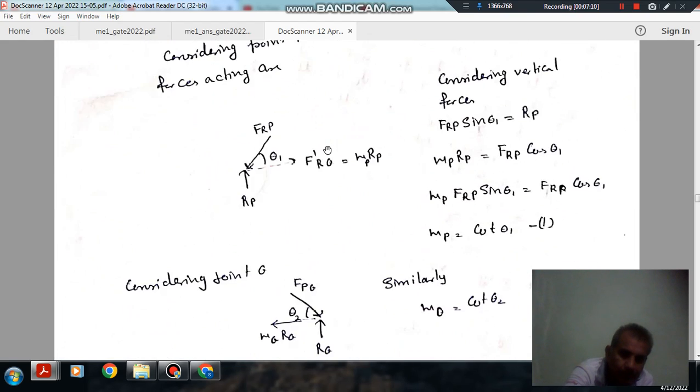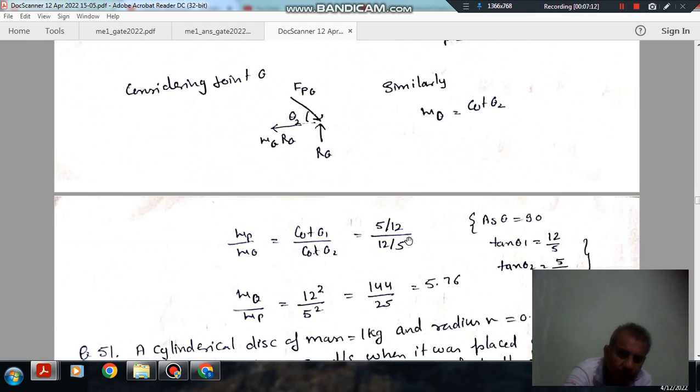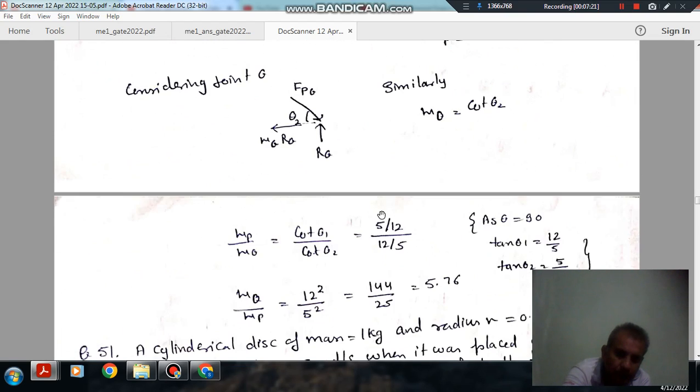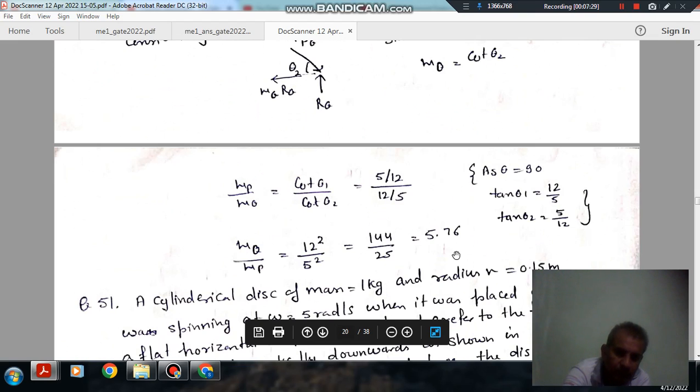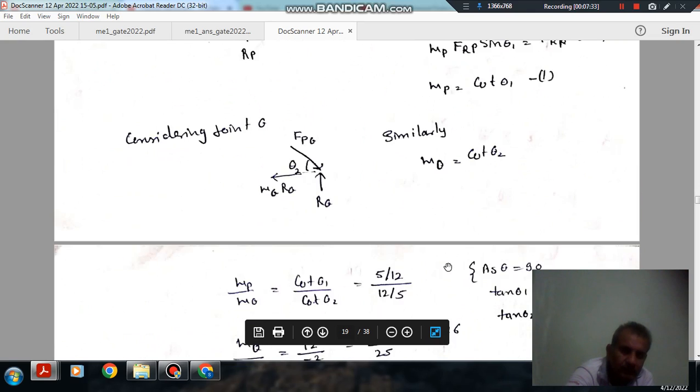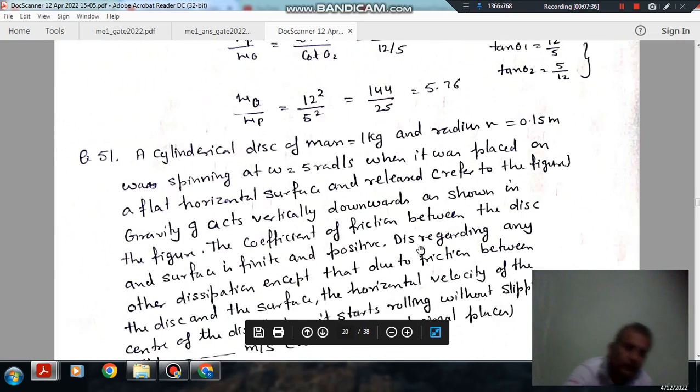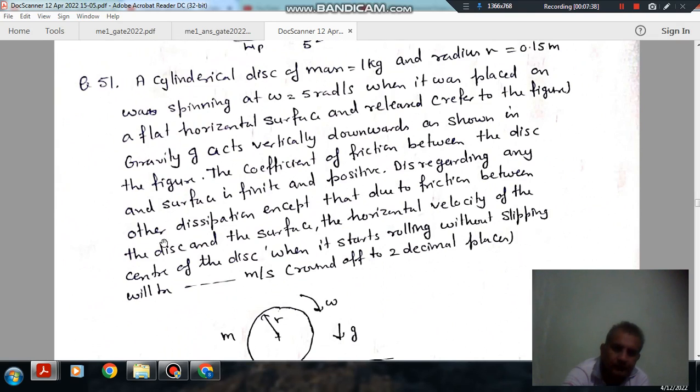Cot(theta1) by cot(theta2). So the ratio mu_P by mu_Q will be 12 squared by 5 squared, or 144 by 25, that is 5.76. So the answer is 5.76.